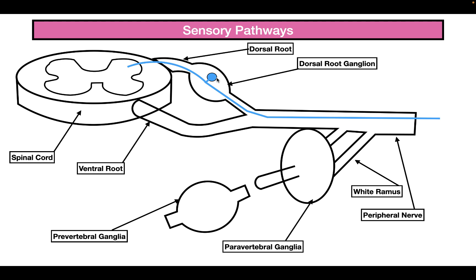It's in the dorsal root ganglion that we see the cell body of the sensory neuron. Then the sensory neuron projects through the dorsal root into the dorsal horn, where it projects onto cells inside the central nervous system, allowing them to receive signals from the outside world.